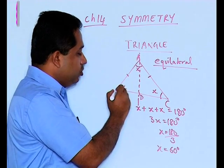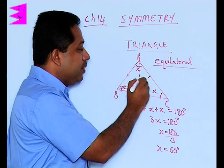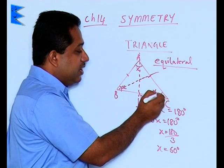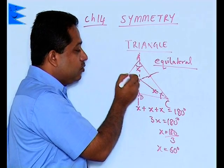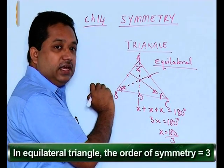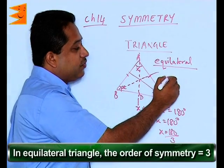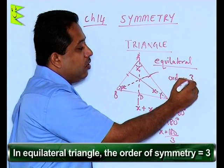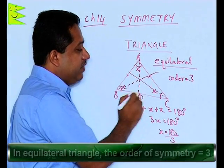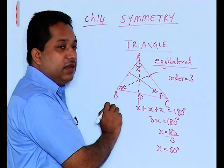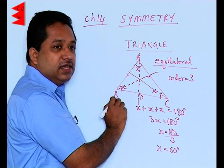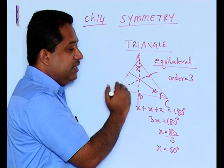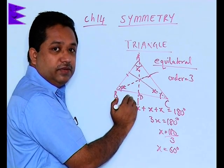We could also have another line of symmetry through B and another line of symmetry through C. So in an equilateral triangle, we find that the order of symmetry is equal to 3. There are three ways in which an equilateral triangle can be divided such that the figures on either side will coincide.